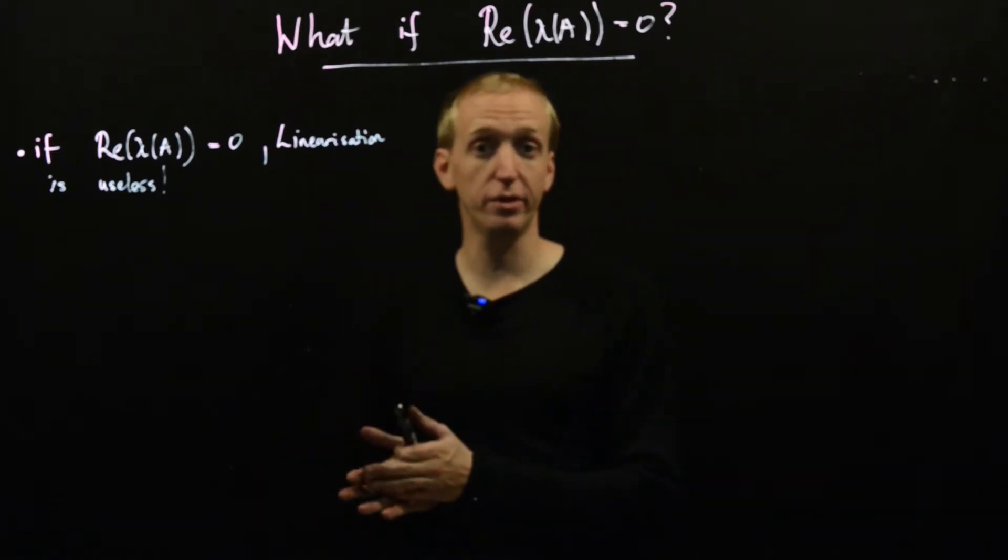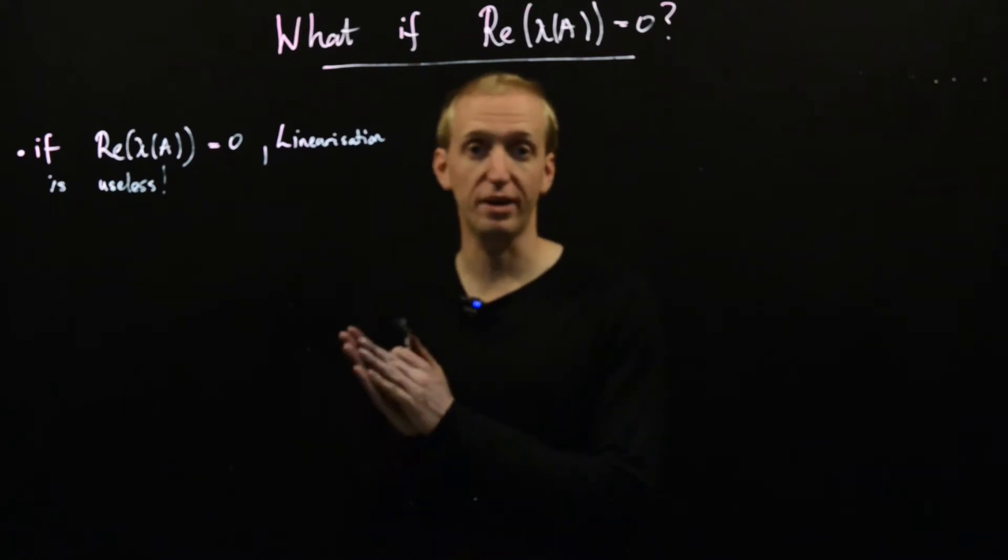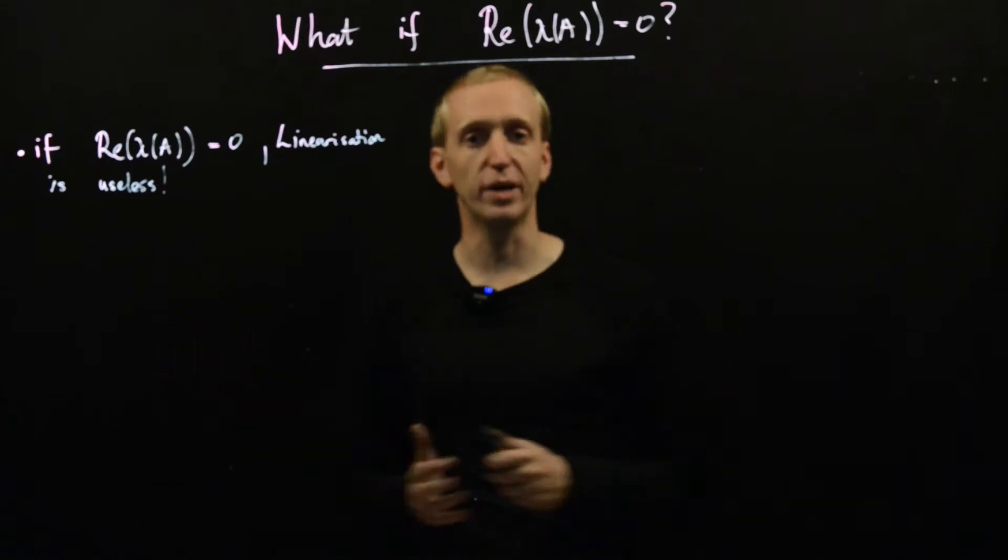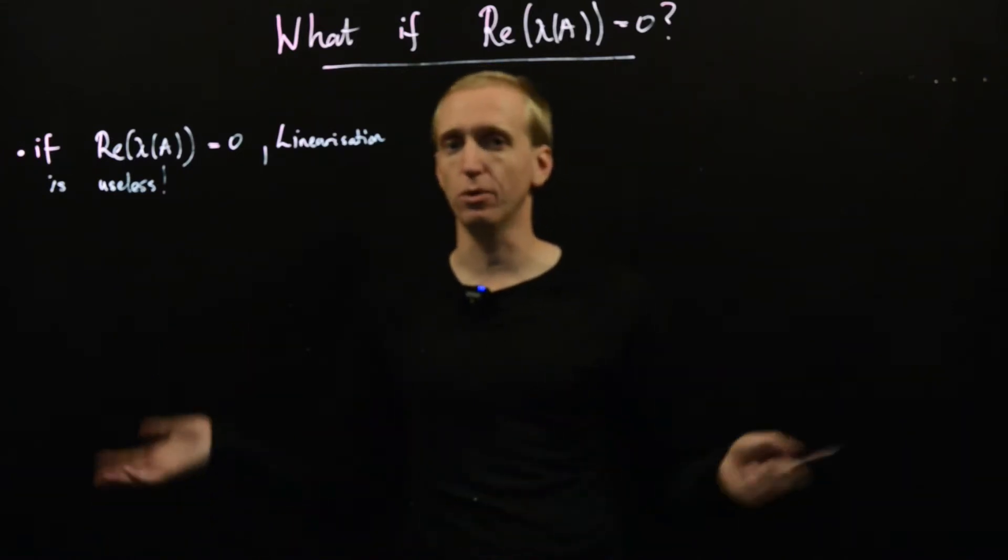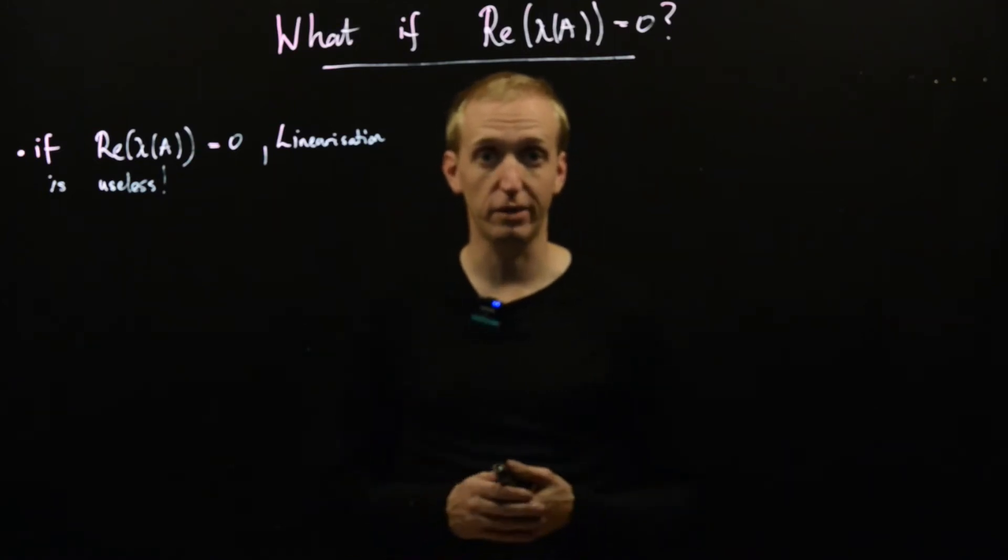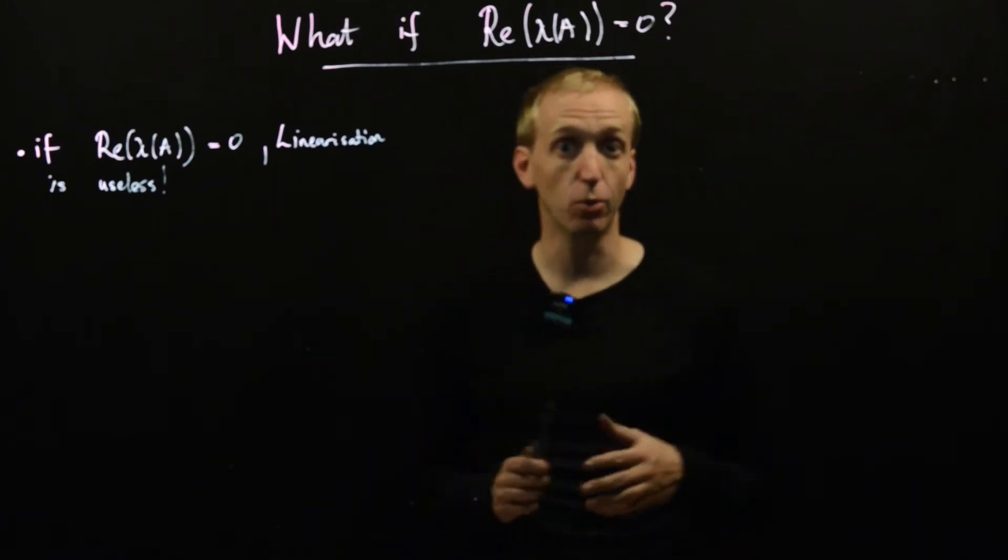But when you deal with non-linear systems, if your linearization has eigenvalues on the imaginary axis, you don't know whether your behavior is going to be stable or unstable or whatever. It could be anything. And I want to just give you a little bit of the intuition for why this is the case.